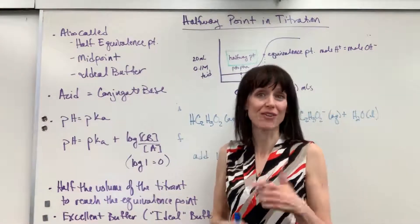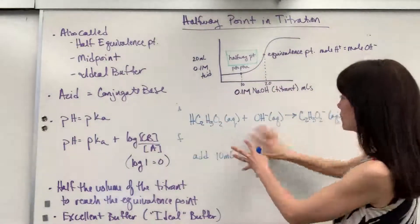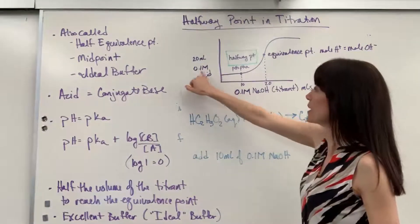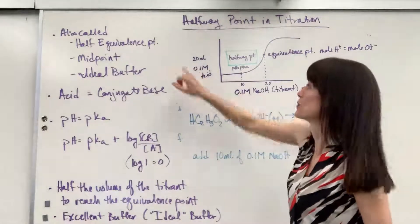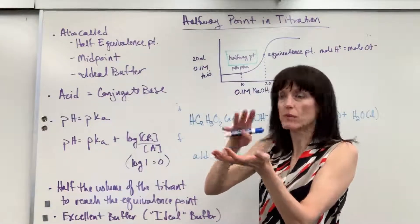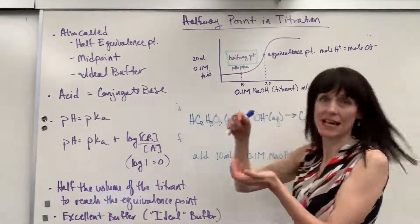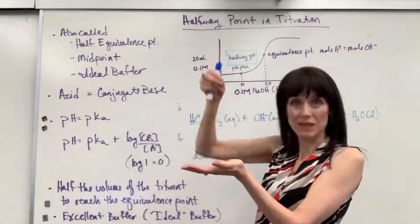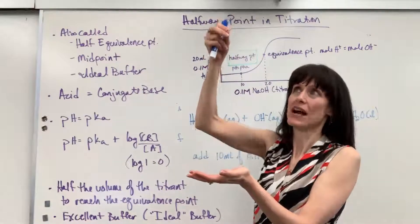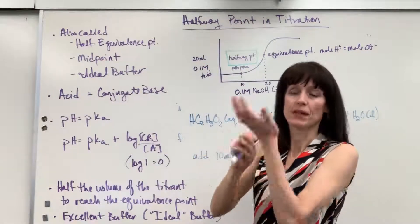Let me show you on a titration graph where this lies. Here I have my titration curve. For this example, we're going to have acetic acid — 0.1 molar and we have 20 mils. That's what you would have in the Erlenmeyer flask. The titrant, which is what's in the burette, is going to be 0.1 molar sodium hydroxide, and I'm going to use that to titrate this acid.